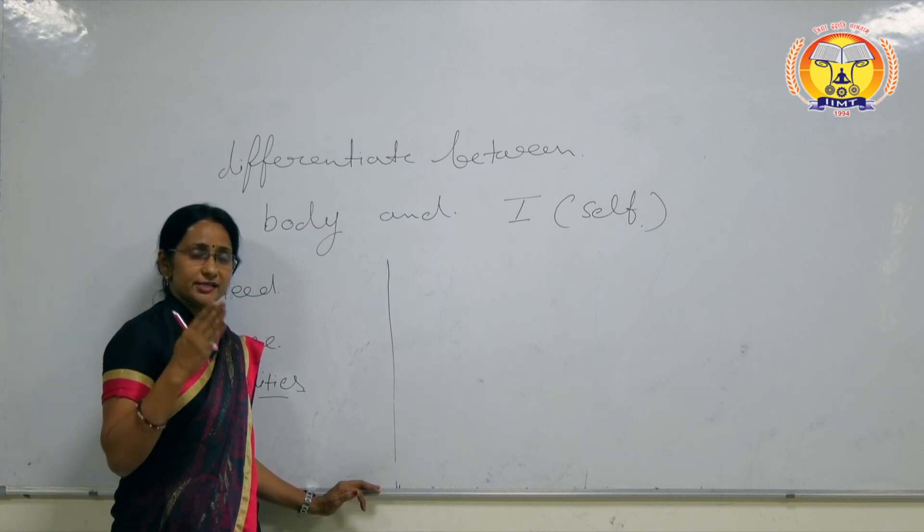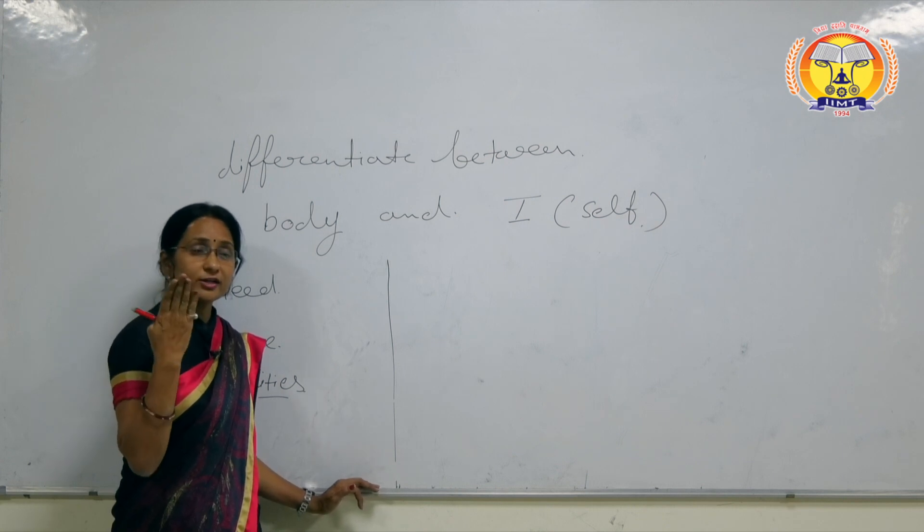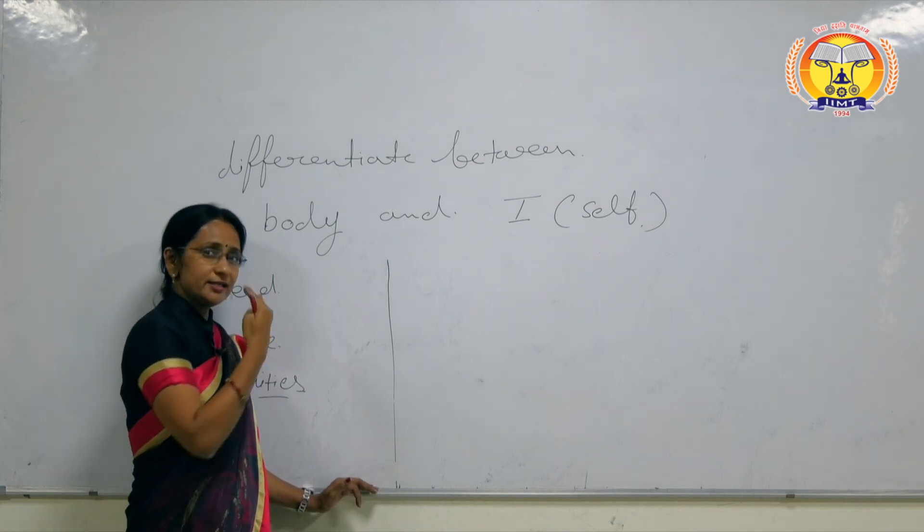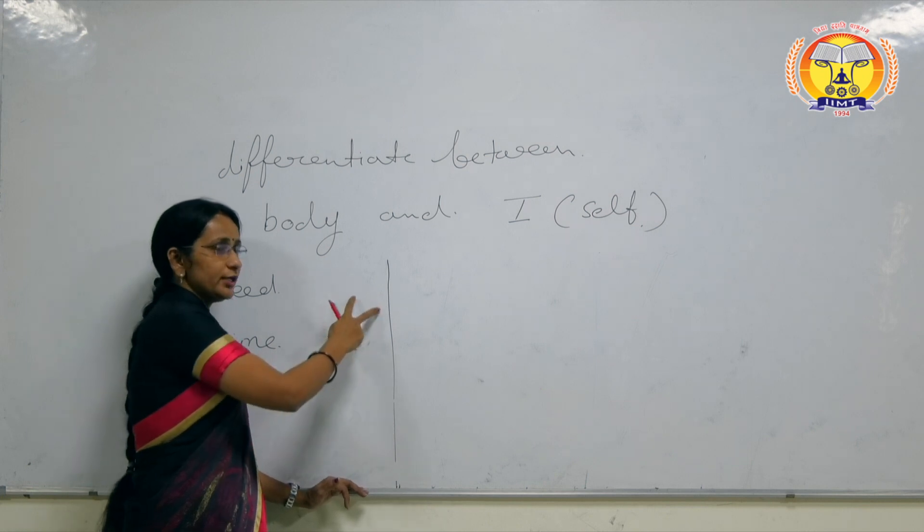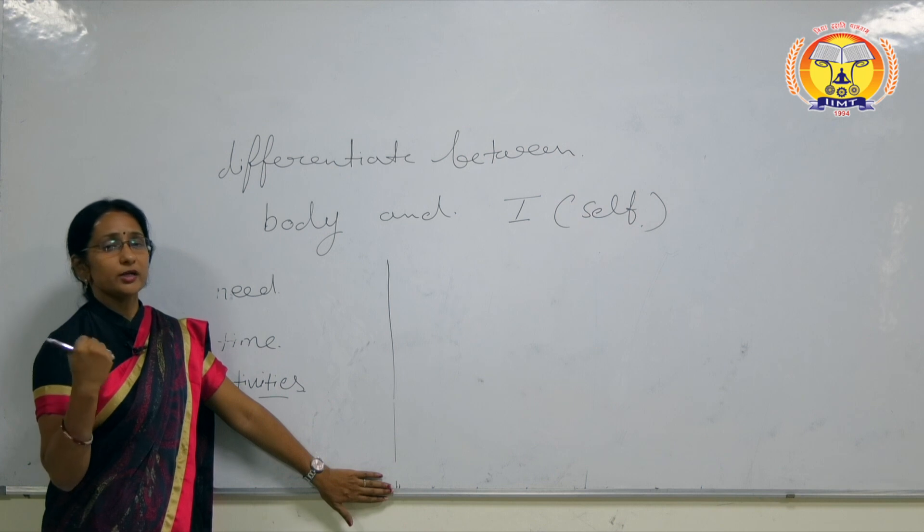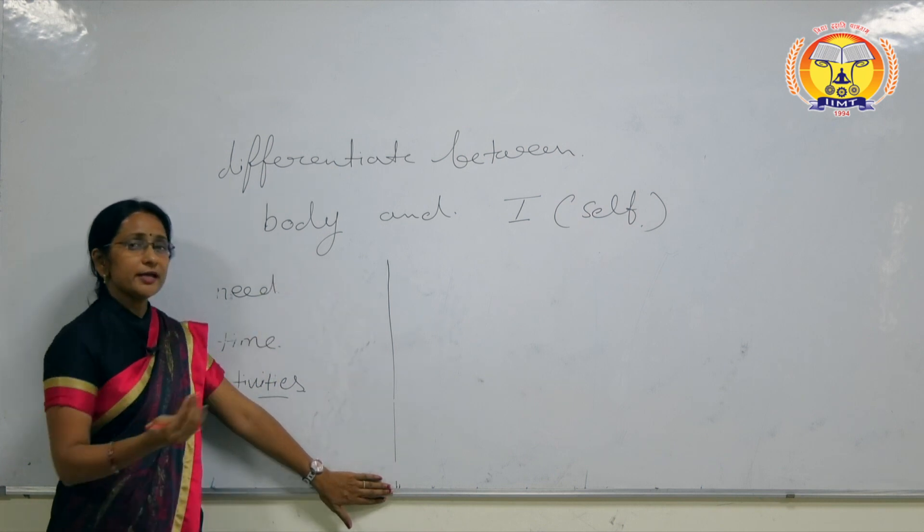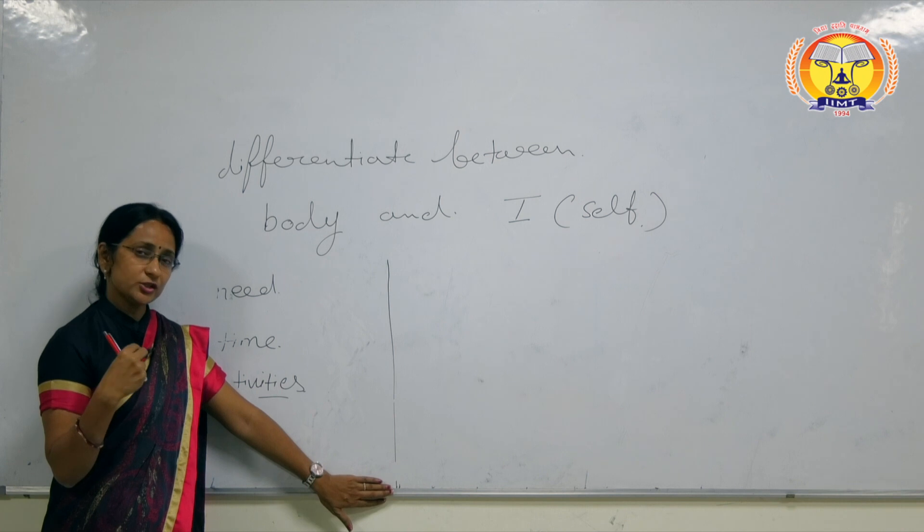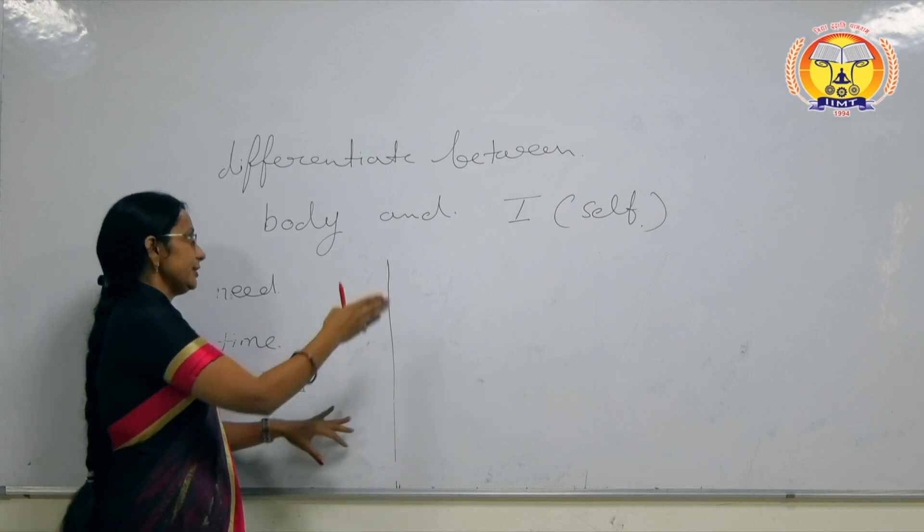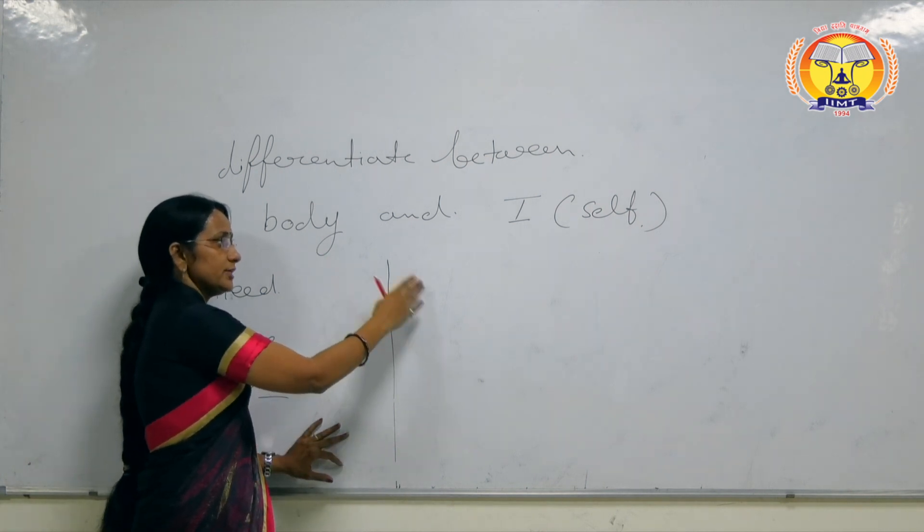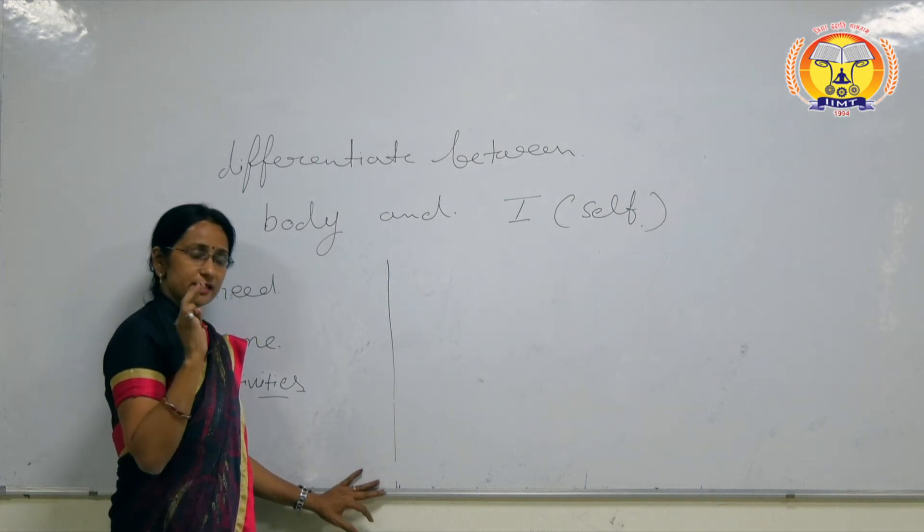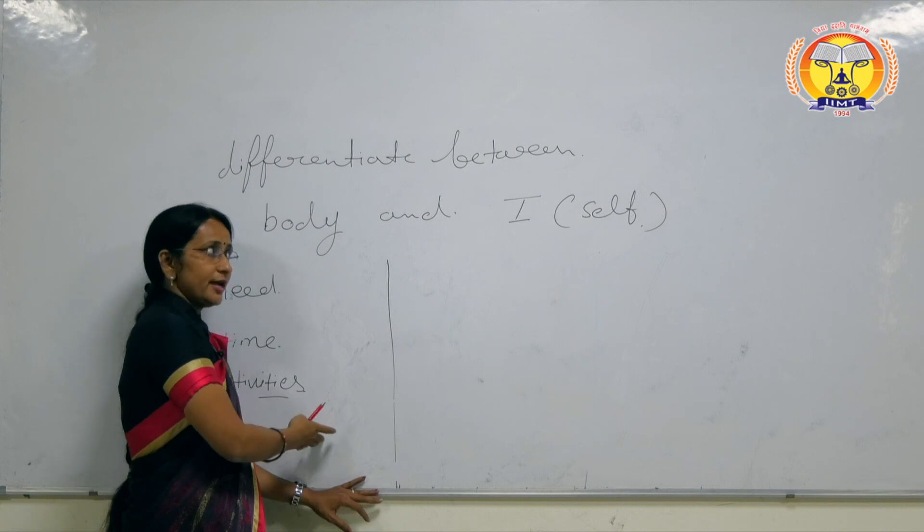But when body and self are used together, both parts are involved. Like seeing: self thinks we should see, then body uses eyes. Eating: conscious entity feels hungry, then body as an instrument fulfills it through mouth and hands. These activities are for both body and self. We can distinguish the activities three ways: first is body, then is self, then both.